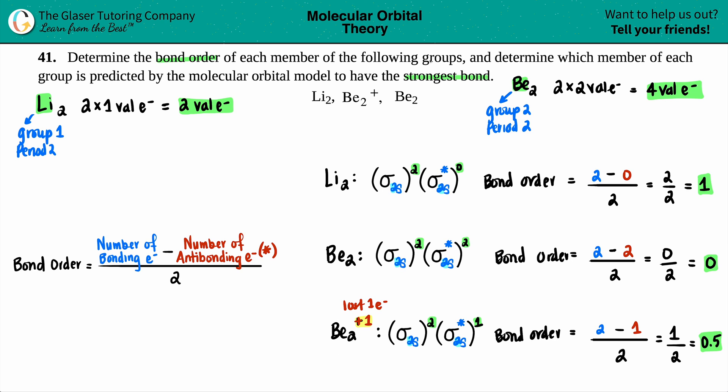Now they wanted to also know the strongest bond. The strongest bond always has the highest bond order. So now you just have to rank the bond order out of these three. One is the highest number, so Li₂ would be the strongest bond. And that's it.